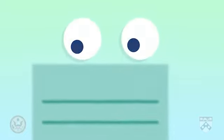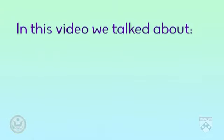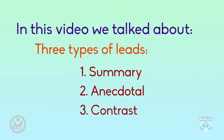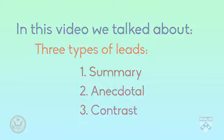As you can see, the first paragraph in an article is oftentimes the most important. It's the first paragraph that helps the reader decide whether or not to read the entire article. In this video, we talked about three types of leads: summary, anecdotal, and contrast. In the next video, we'll talk about the process of writing a lead. Thank you for listening.